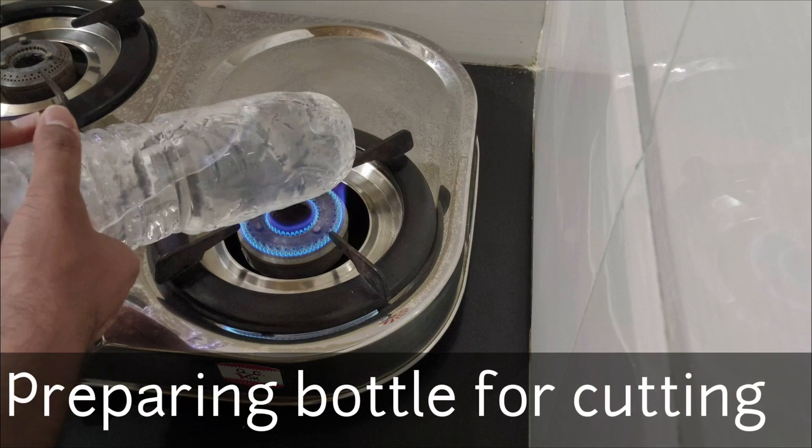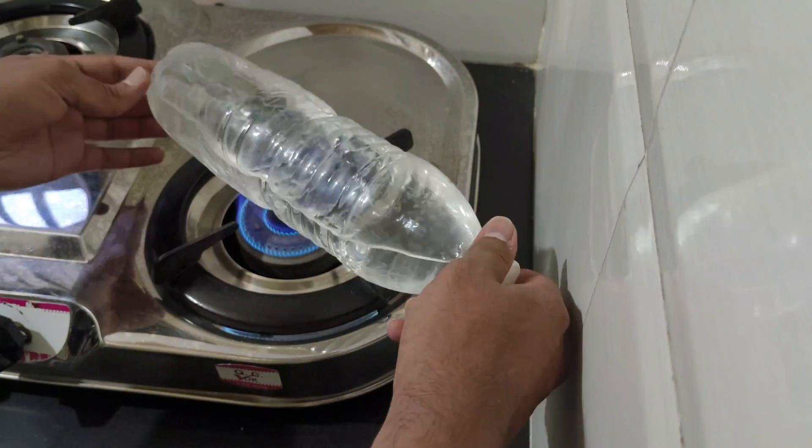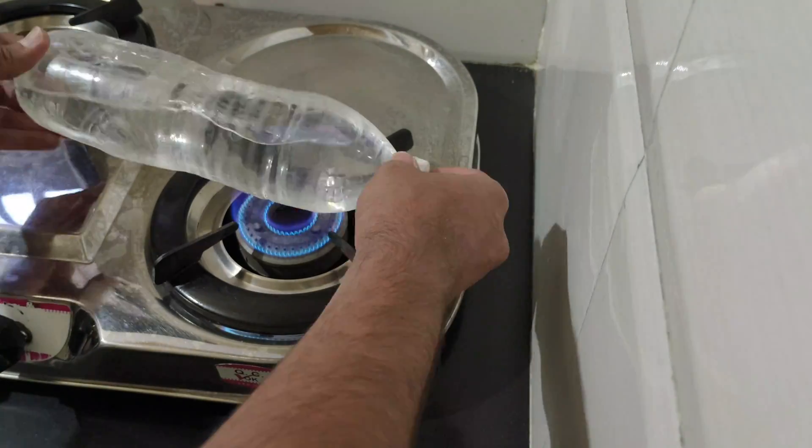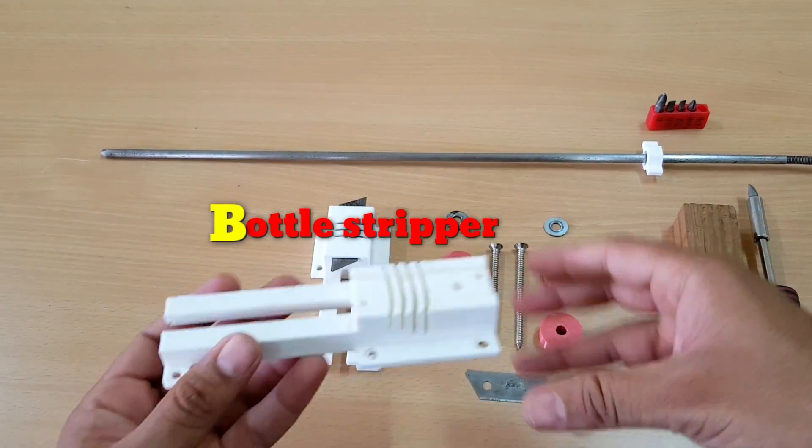Now let's prepare bottle by heating slightly to make the surface smooth and even so that strips made are of uniform length. After water bottle is ready, it's time to make strips.